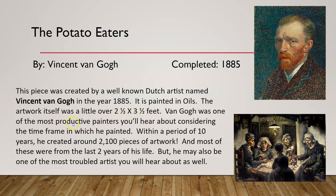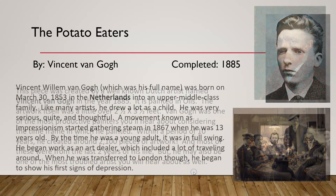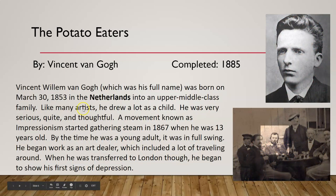Van Gogh was one of the most productive painters you'll ever hear about, considering the time frame in which he painted. Within a period of about 10 years — the only time he painted — he created around 2,100 pieces of artwork. That is a lot. Most of these were from the last two years of his life. But he may also be one of the most troubled artists you will hear about as well.